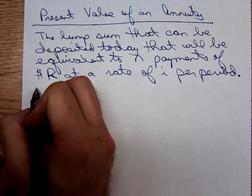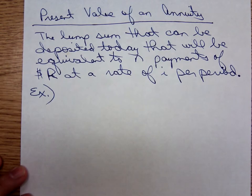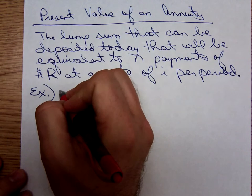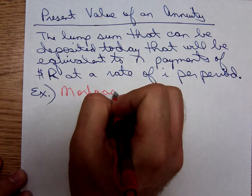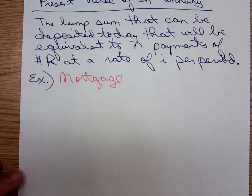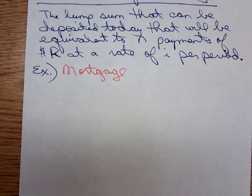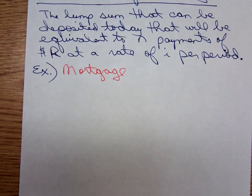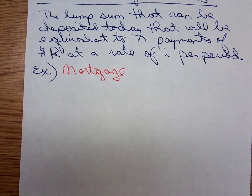A good example of this that most people will experience during their life is any sort of amortized loan. The one that springs to mind is a mortgage. If you get a mortgage for a house or a condo, the financial institution considers that mortgage an account. Say you get a loan for $300,000 to buy a new house — the account balance on day one is $300,000. If it's a 30-year loan, at the end of the 30-year period that account balance will finally be down to zero, but the large lump sum occurs at the beginning.